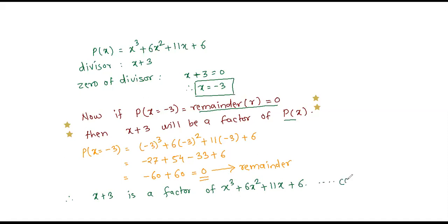Therefore, x plus 3 is a factor of x cube plus 6x squared plus 11x plus 6. This is our conclusion. Hope you have understood this problem. Thank you.